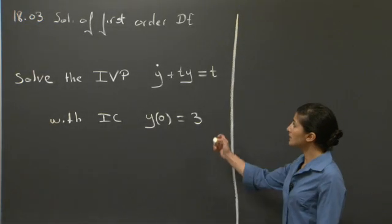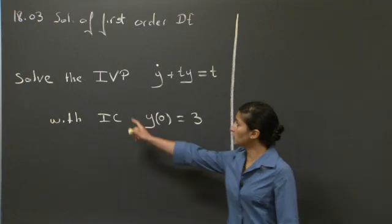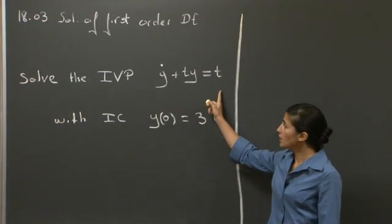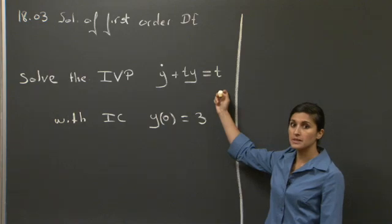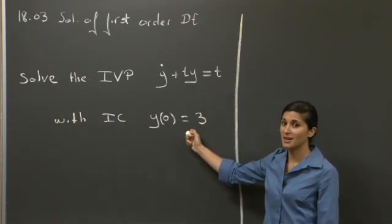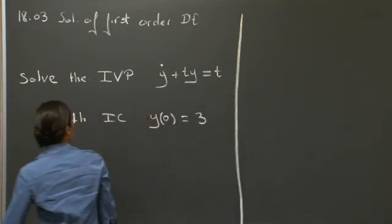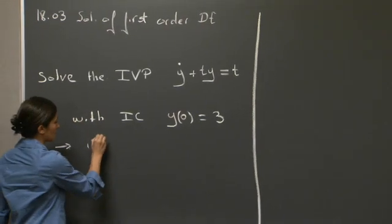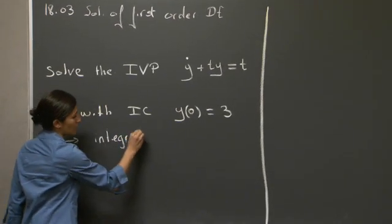Welcome back. In this session, we're going to tackle an initial value problem: ẏ + ty = t. This initial value problem is subject to the initial condition y(0) = 3. We are going to use the method of integrating factor.